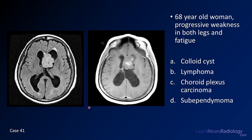Case number 41 is a 68-year-old woman with progressive weakness in both legs and fatigue. We've got a FLAIR image and a blurry post-contrast image here. Your choices are colloid cyst, lymphoma, choroid plexus carcinoma, or subependymoma.